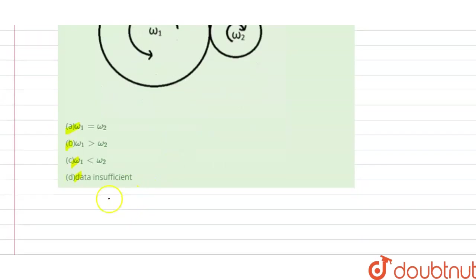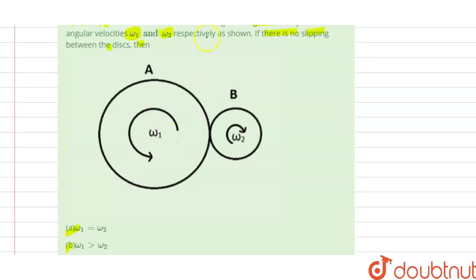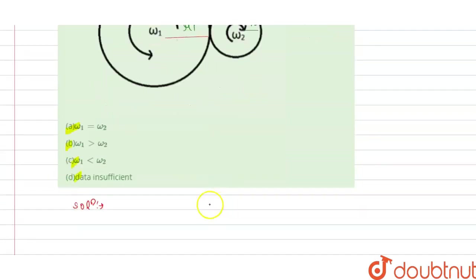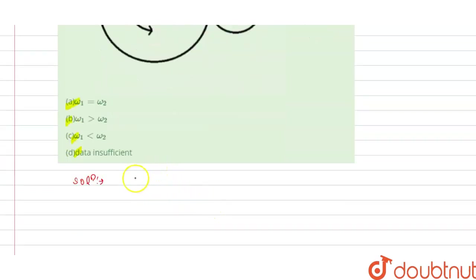So the solution of this question is: let us suppose this has the radius r1, and this has the radius r2. The condition given to us is no slipping.